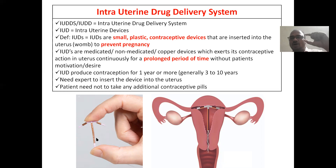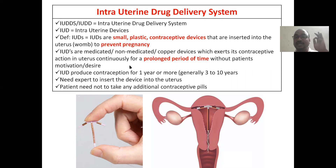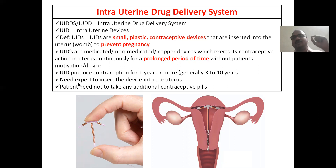See here how small it is — small plastic contraceptive devices that are inserted into the uterus to prevent pregnancy. These are medicated, non-medicated, or copper devices which exert contraceptive action in the uterus continuously for a prolonged period — more than one year, generally three to ten years. It needs an expert person to insert inside; you need a doctor, a gynecologist for the insertion into the uterus.